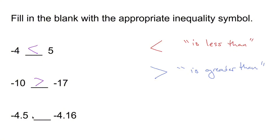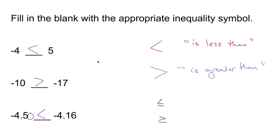Negative 4.5 is less than negative 4.16 because, again, negative 4.5 is the same as 4.50, and that is a larger number than 4.16. So a larger negative means it's smaller. There are other inequalities too — less than or equal to, and greater than or equal to — but we're only concerning ourselves with these two main ones, and that's how you do this problem.